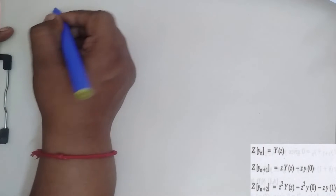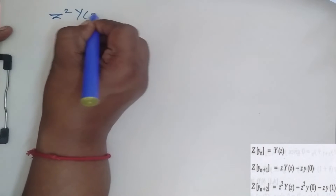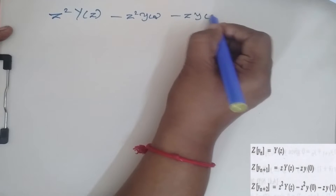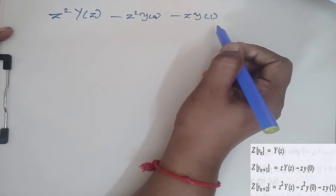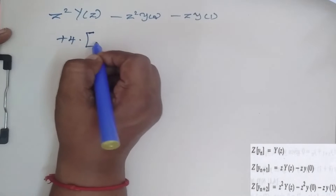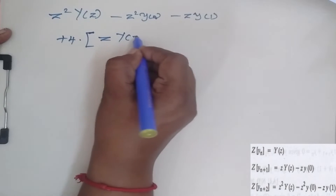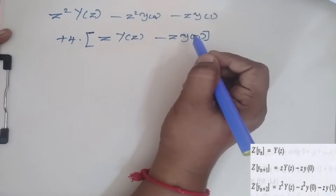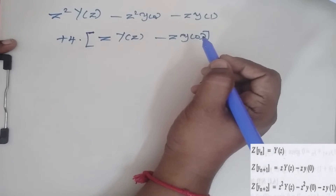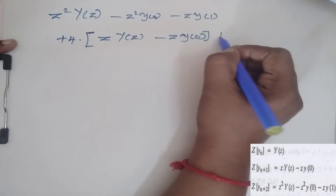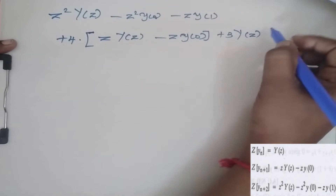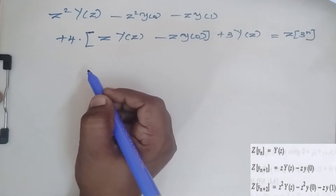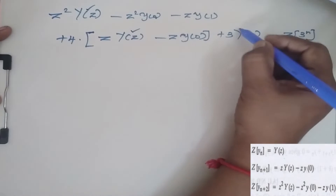So Z{y(n+2)} is z² Y(z) minus z² y(0) minus z·y(1). Then I have 4 times Z{y(n+1)}, which is z·Y(z) minus z·y(0). Then I have my 3·Z{y(n)}, which is Y(z). This equals Z{3^n}. Now I am going to combine all Y(z) terms together.